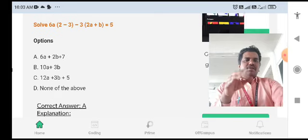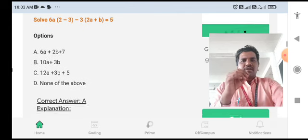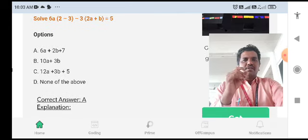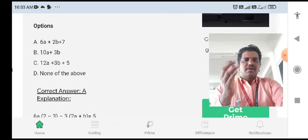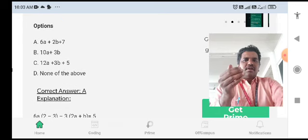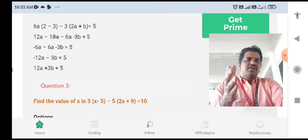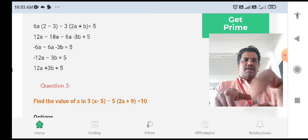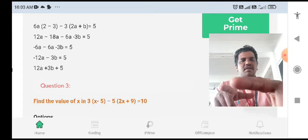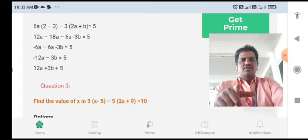These types of questions will be asked in the first time to find out the unknown variable. Second one is 6A into 2 minus 3, minus 3 into 2A plus B equal to 5. Here also, they are given four choices A, B, C, D. And also, they are given a correct answer. How the explanation is going to give them. In the bracket value, the unknown variable also will be without bracket, and they just simply multiply with the bracket value. That is a simple thing in this particular question.